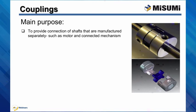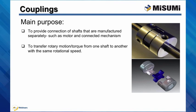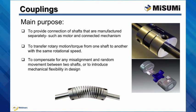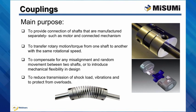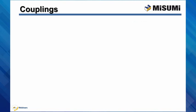A shaft coupling is a device designed to connect shafts that are manufactured separately, such as a motor and connected mechanism. The main purpose is to transfer rotary motion or torque from one shaft to another without changing rotational speed. At the same time, they need to compensate for any misalignment and random movement between two shafts, reduce transmission of shock loads, vibrations, and protect connected mechanisms from overloads.